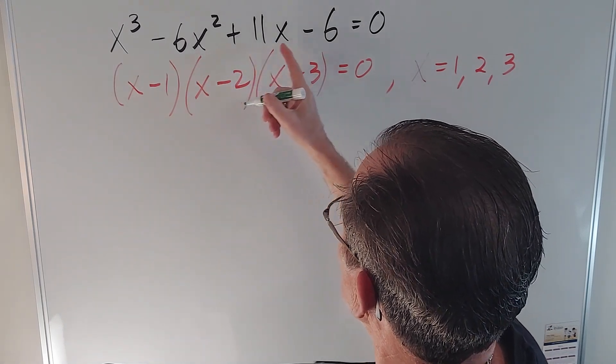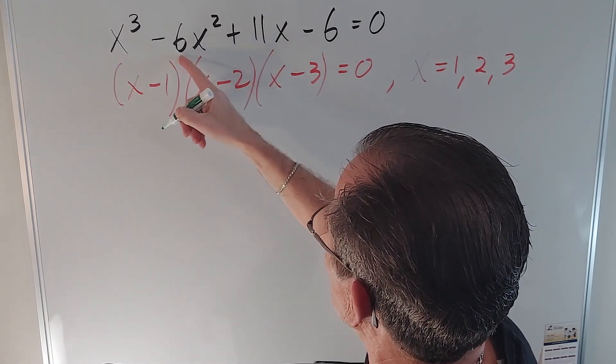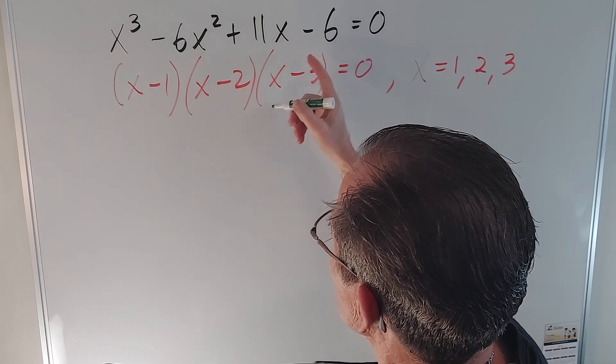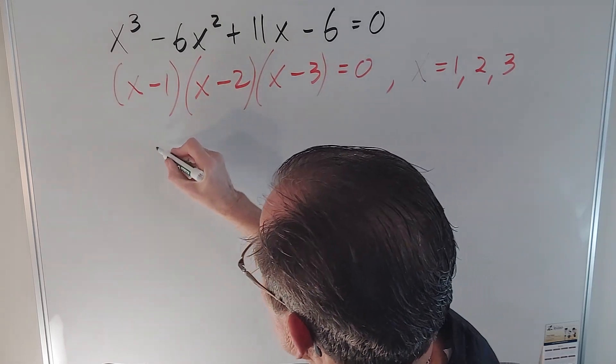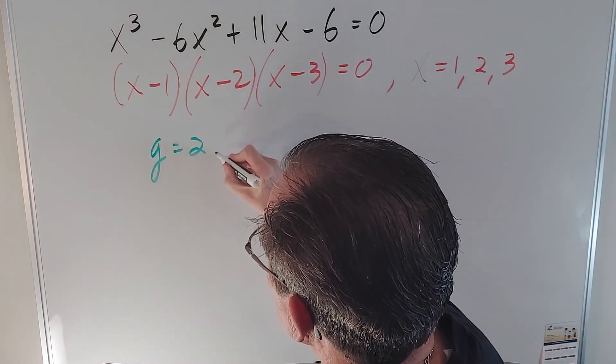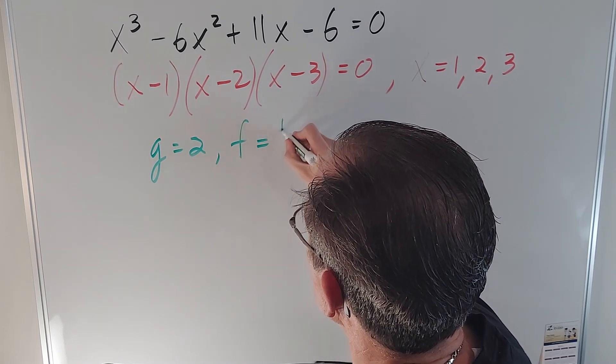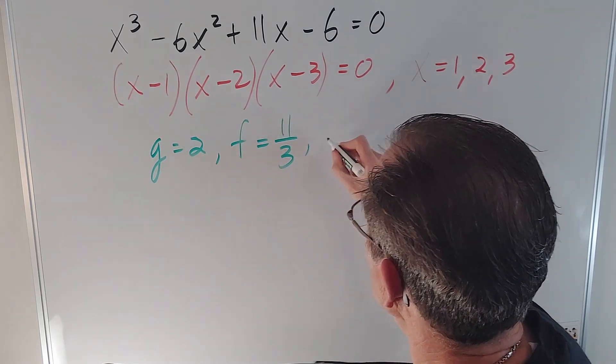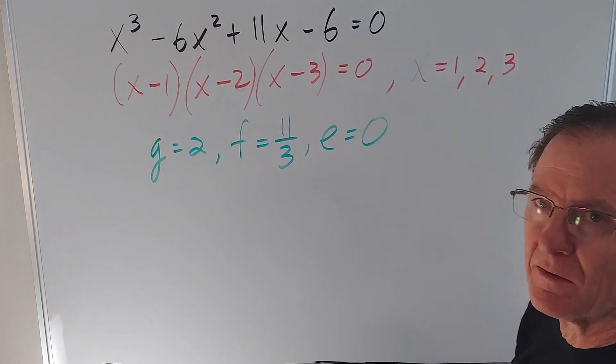So if I plug B, C, and D into the formulas for E, F, and G: G turns out to be 2, fairly nice. F is 11 over 3, not so nice. And E is a big fat zero, really nice.